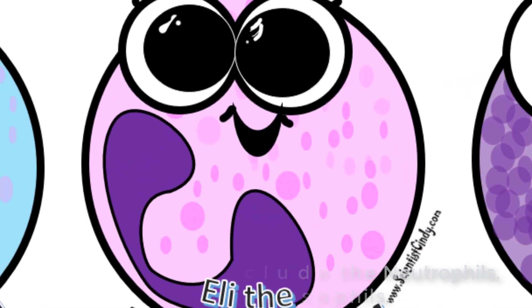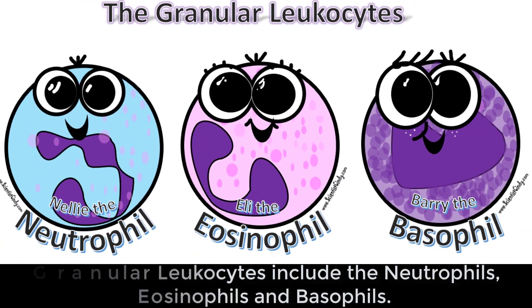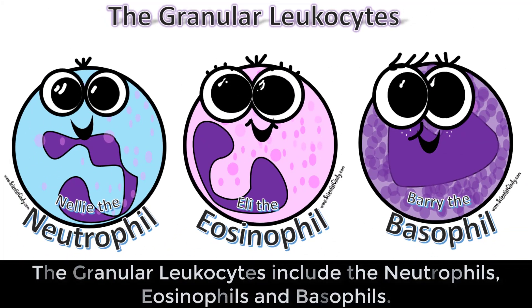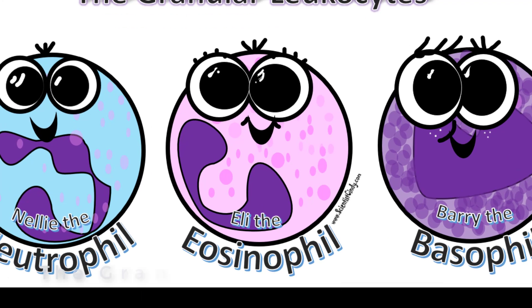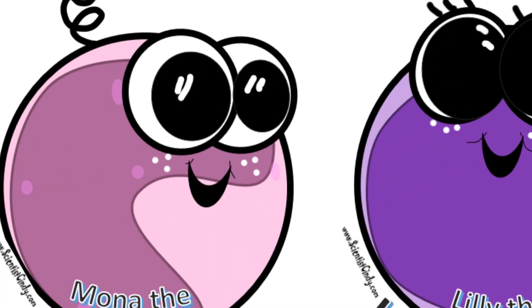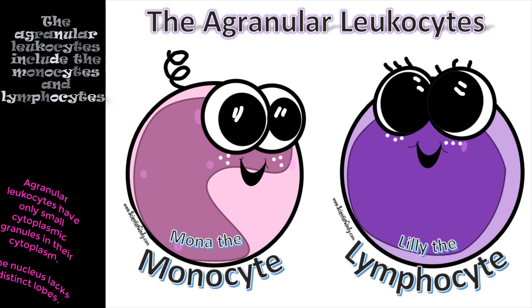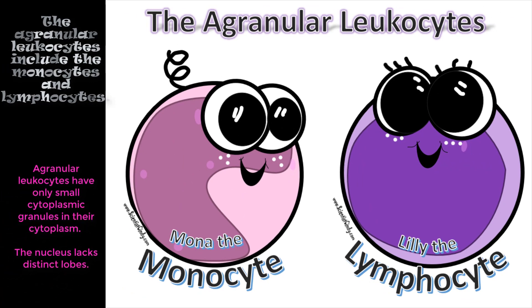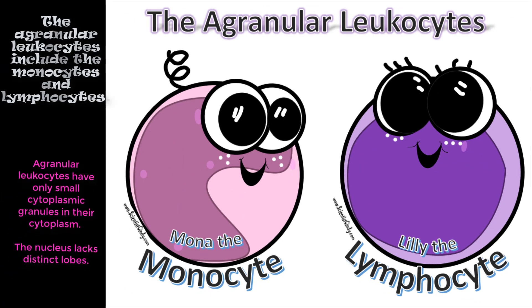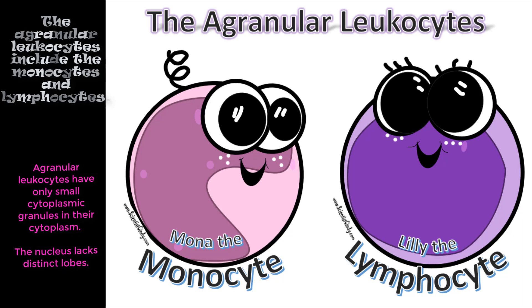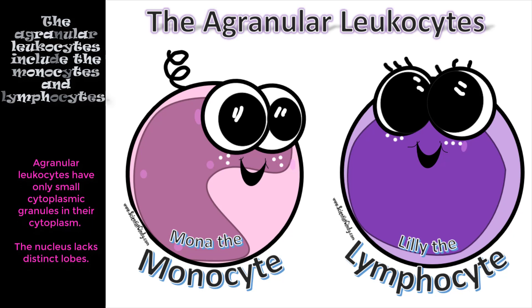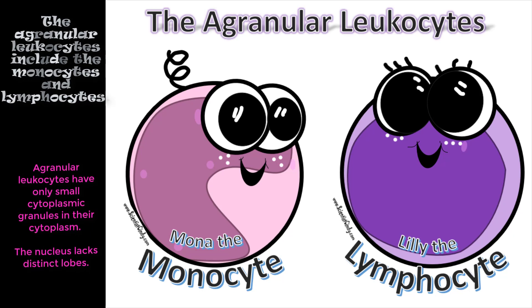The granular leukocytes include neutrophils, eosinophils, and basophils. The agranular leukocytes include monocytes and lymphocytes. Agranular leukocytes have only small cytoplasmic granules in their cytoplasm, and the nucleus will lack distinct lobes.